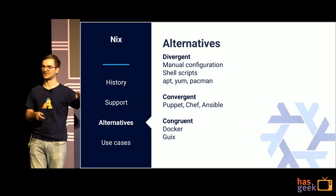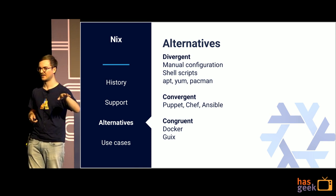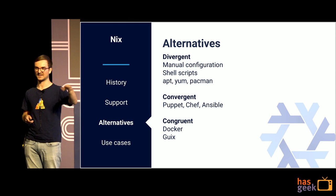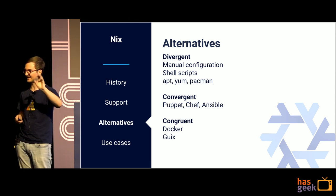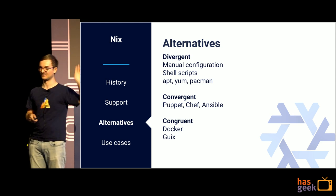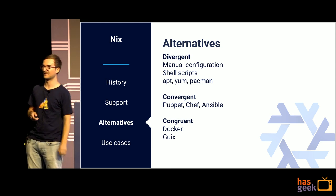The last one is GUIX, which is a fork of Nix — it just replaces parts of Nix. If you don't like the Nix programming language and you like Scheme, GUIX replaces the Nix programming language with Scheme.